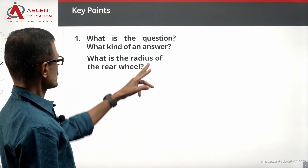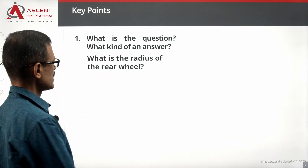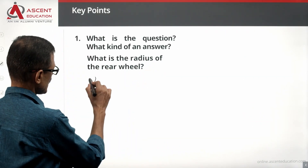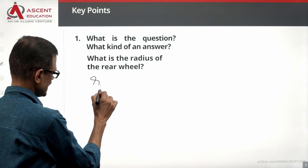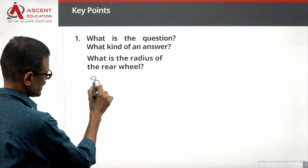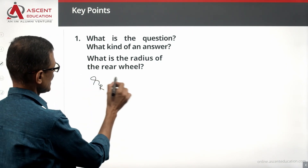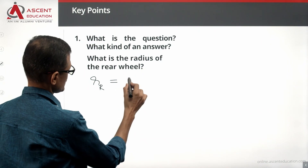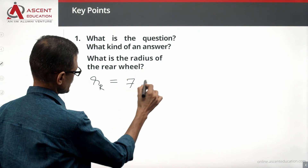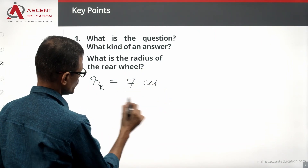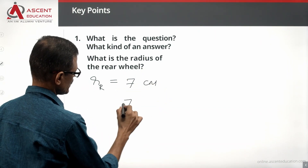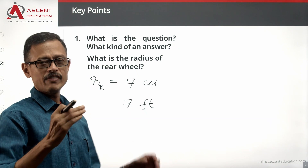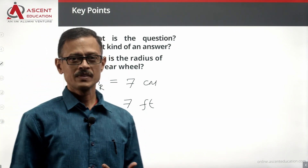What is the question? What is the radius of the rear wheel? Let the rear wheel radius — small r — be RR. Let's say RR is equal to 7 feet. We need to find a number as the answer.